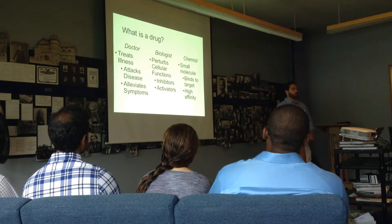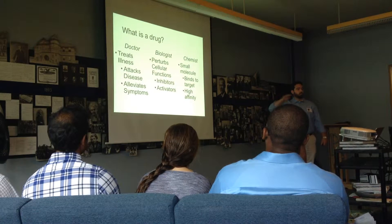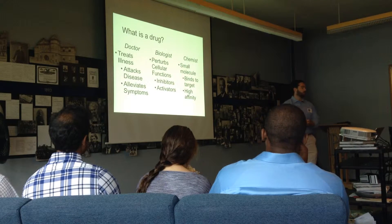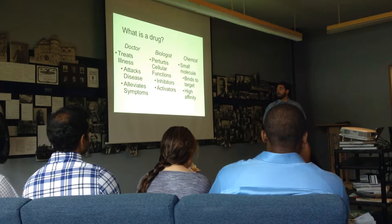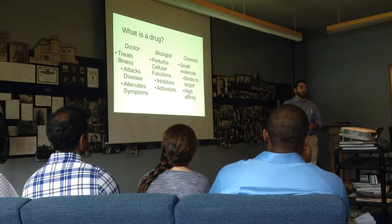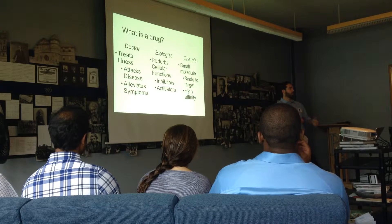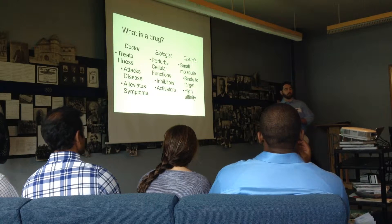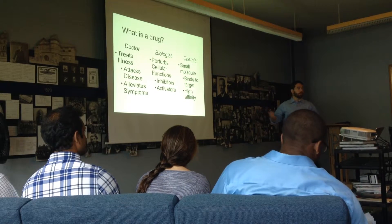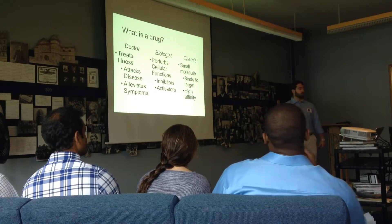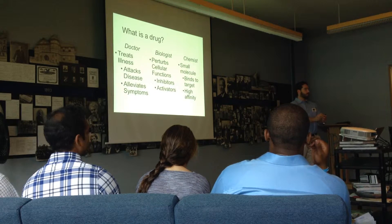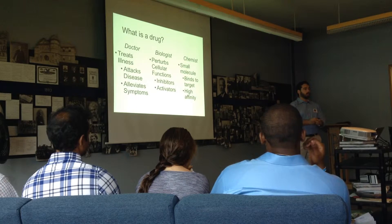First, let's define what a drug is. If you ask a bunch of different people, you'll get a whole bunch of different answers. To a doctor, a drug is something that can treat an illness and helps alleviate disease or symptoms of the disease. If you ask a biologist, it perturbs the biology of the system — you can tell cells to grow, tell them to kill themselves. Or, if you talk to a chemist, a drug is a small molecule that has very high affinity for a specific target and can perturb how that works.